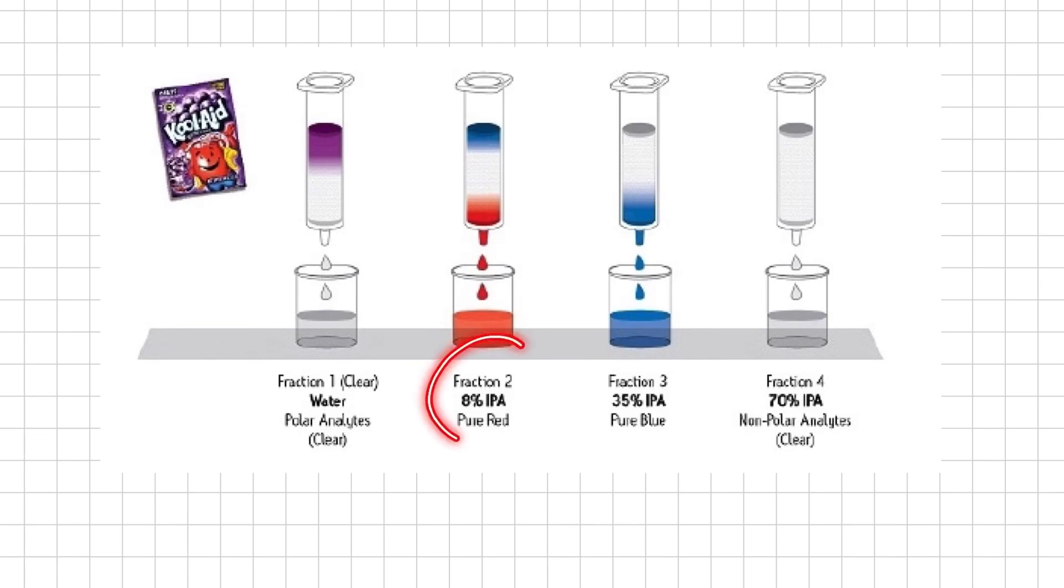Rinse steps with increasing concentration of IPA or isopropyl alcohol, which is 8% in the second fraction, then 35% in the third fraction. The red color is less polar, so it has been eluted with 8% isopropyl alcohol, whereas the blue color is more organic in nature, so it is eluted with 35% isopropyl alcohol. At the last, we have increased to 70% concentration of isopropyl alcohol to remove any purely organic or non-polar species that are present in the sample.